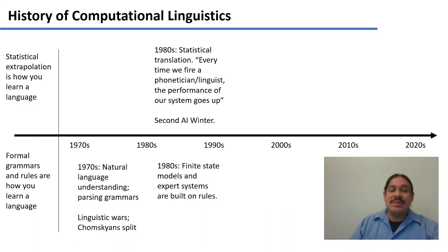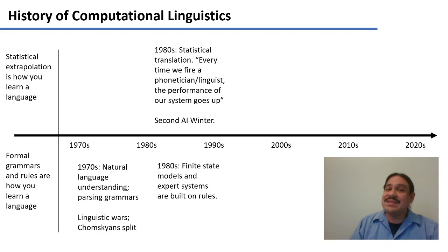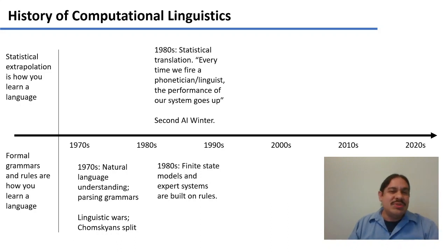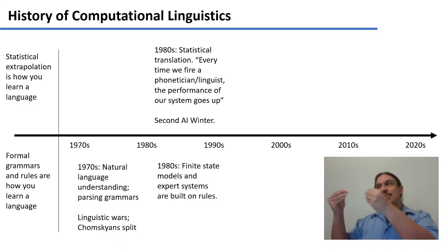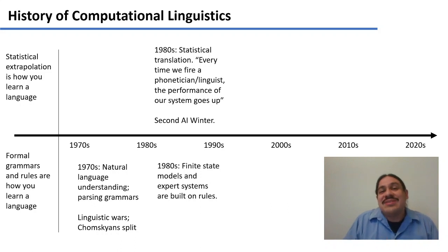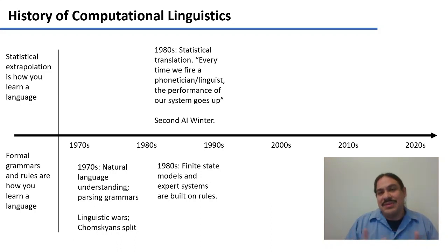On the other side of the fence, people were still trying to work with formalizations of language. People were building automata — finite state machines and finite state transducers — to model aspects of language, but these models turned out to be incredibly large and almost unmanageable. People were also building expert systems, where they believed you could extract the knowledge of a thousand doctors through questions and answers and put all that knowledge into a decision tree that another doctor could query. But extracting that knowledge from humans is extremely work-intensive and expensive, and research has not kept up in that paradigm as it has with statistically-based machine learning.